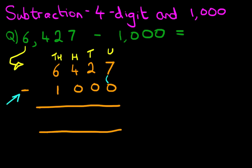7 minus 0, nice and easy, it's 7. The tens column, 2 minus 0, again, nice and easy, 2 minus 0 is 2.